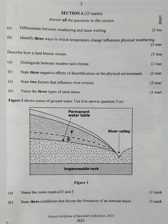Section A is usually compulsory, carried 25 marks. Question 1A: differentiate between weathering and mass wasting.